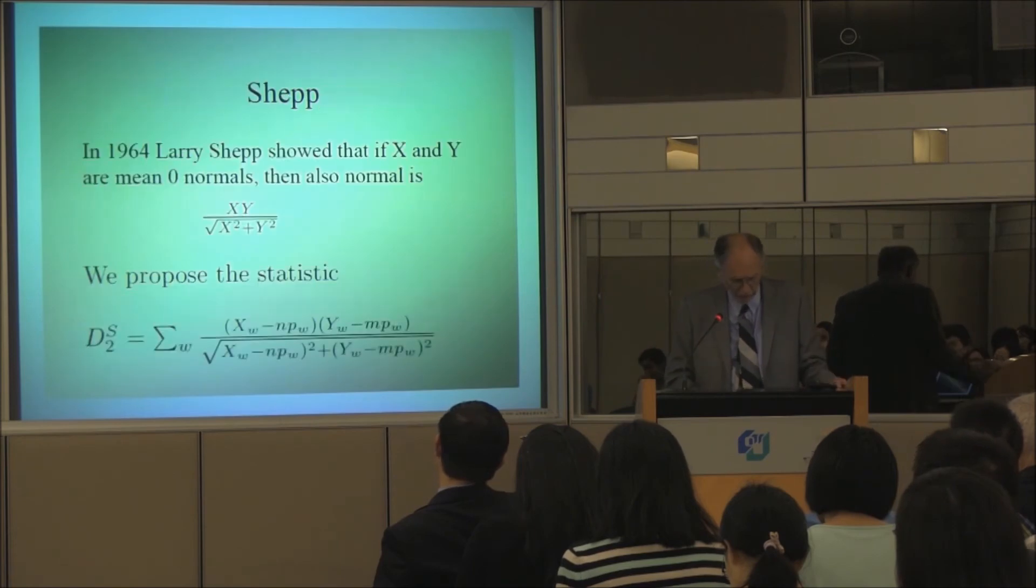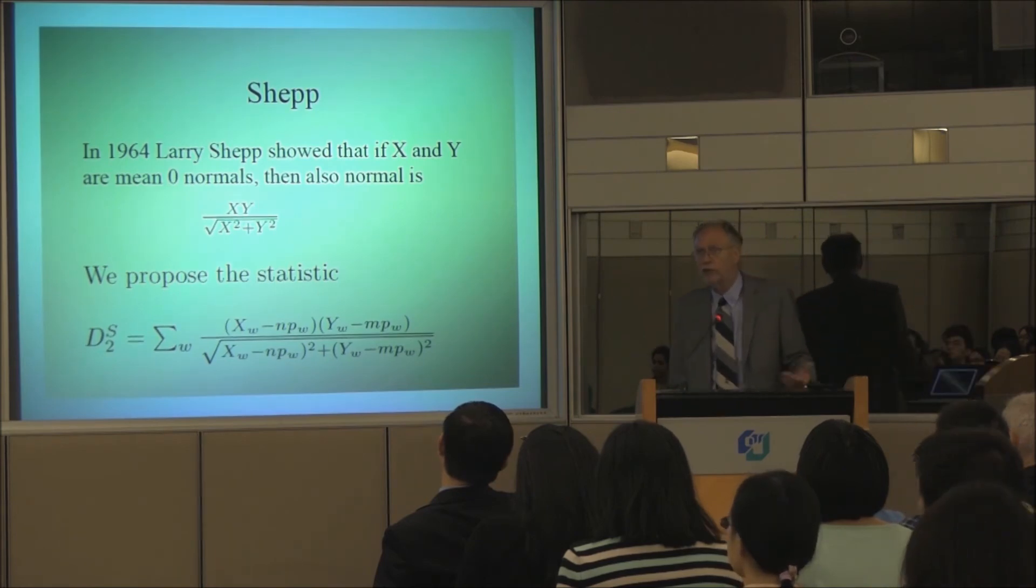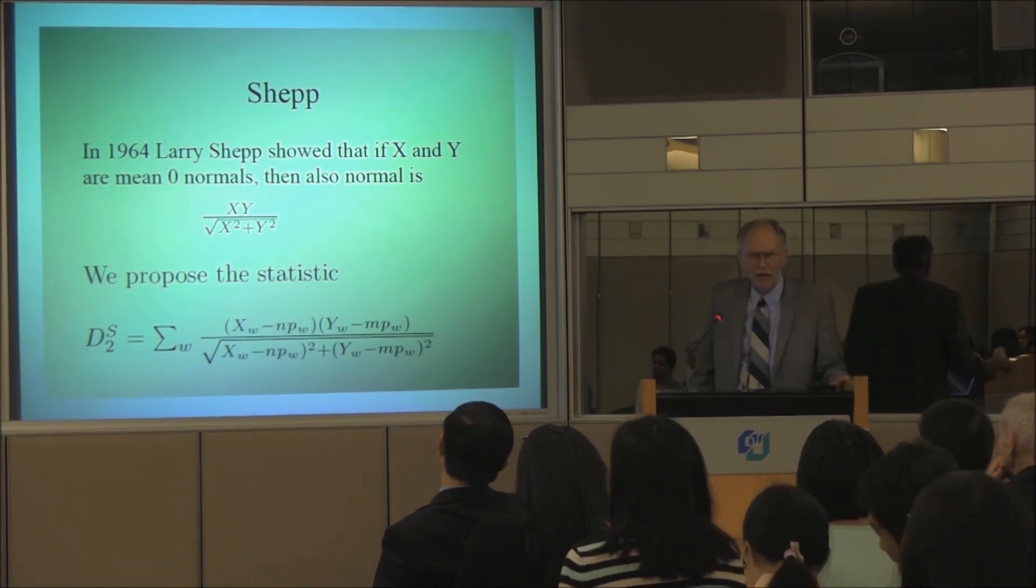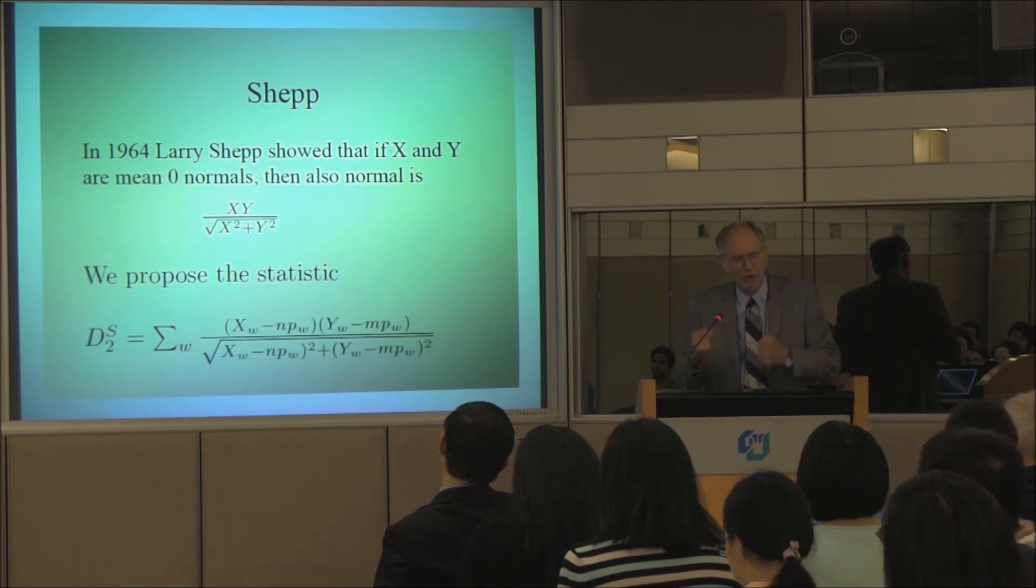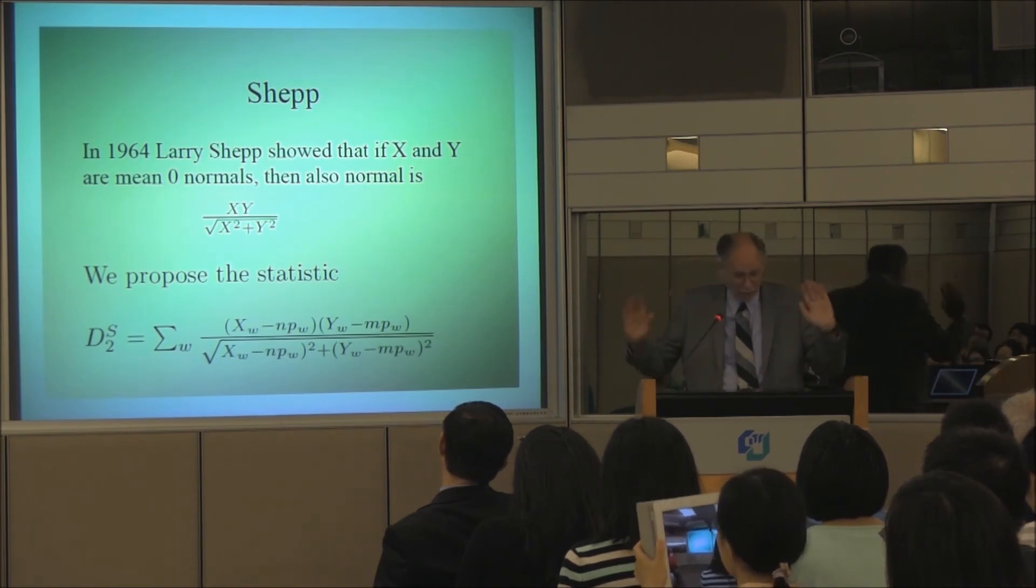So anyway, it gave us a lot of room to work. We picked up a statistic by Larry Shep, who was probably a statistics guy, died about a year ago. He was a character. He would go to Russia and work on very serious stochastic processes and try to get the KGB mad at him. A troublemaker.